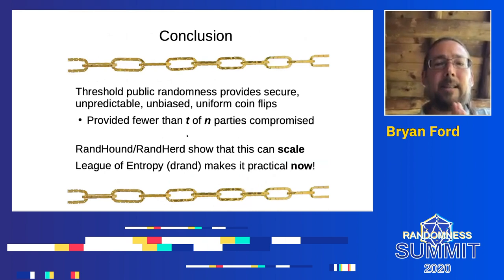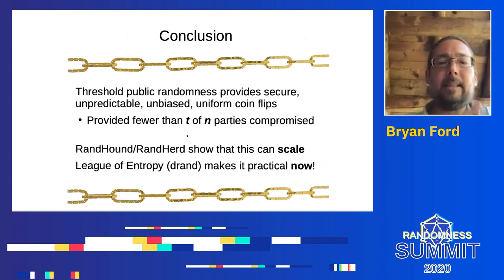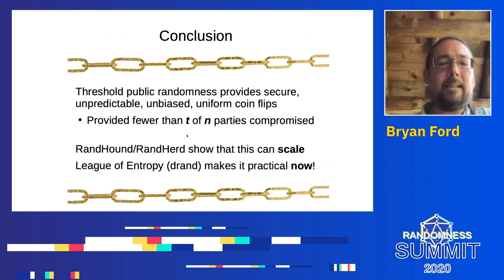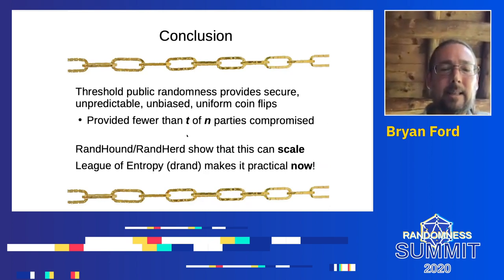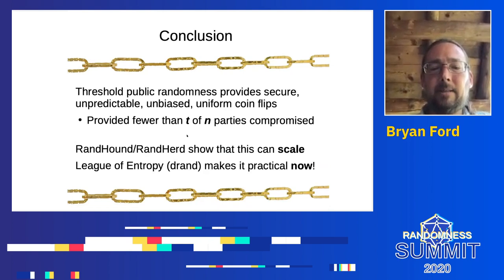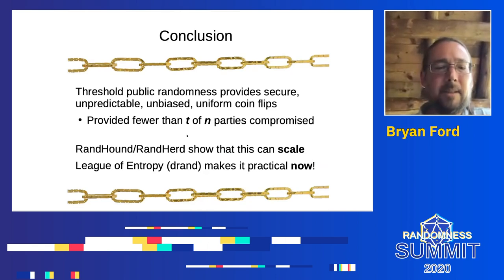I will not get into the details of DRAND to avoid stealing the thunder of the later speakers. To conclude with the key takeaways: threshold public randomness is a very important primitive. To do it right in the threshold model, you need something like Shamir secret sharing. Randhound and Randherd showed how this can scale as much as needed. Now the League of Entropy is taking it further, making it practical and usable as an internet utility. Thank you very much.